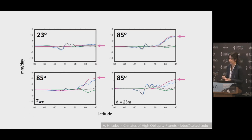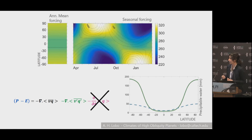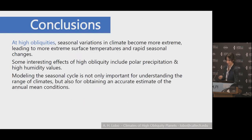Coming full circle: you should care about your seasons. If you run with annual mean forcing, you will not have the time-varying term, you'd see surface temperatures that look more like the annual mean case, and because of nonlinearities you would be underestimating all of your water vapor content.